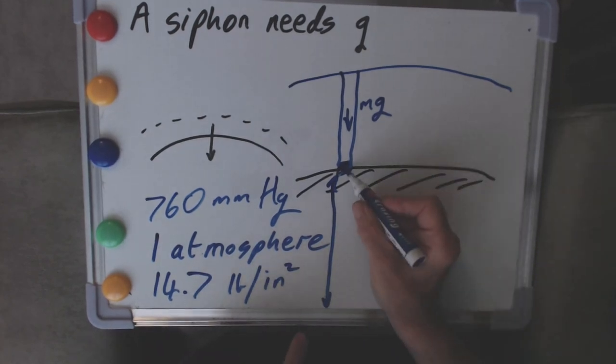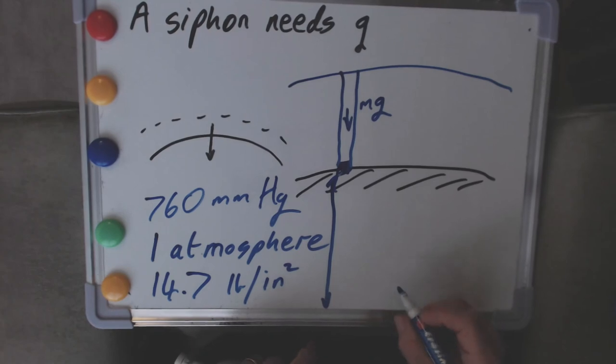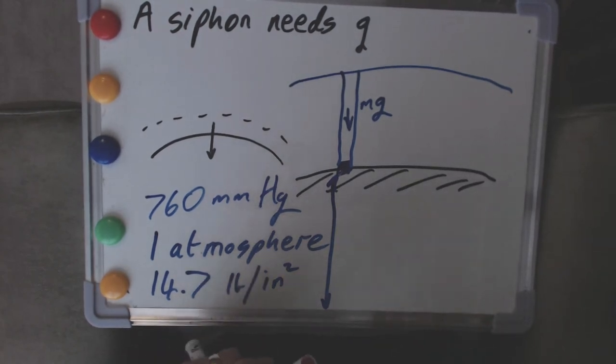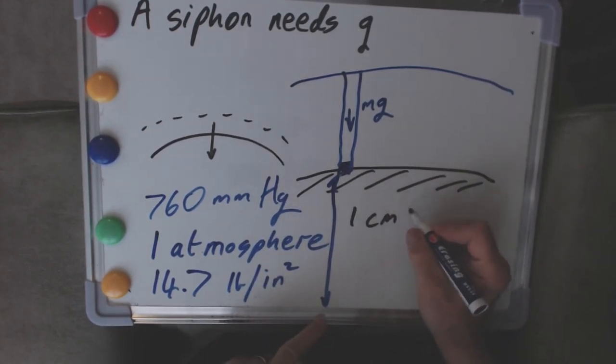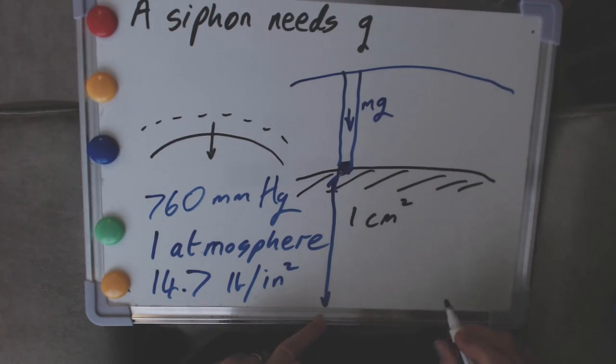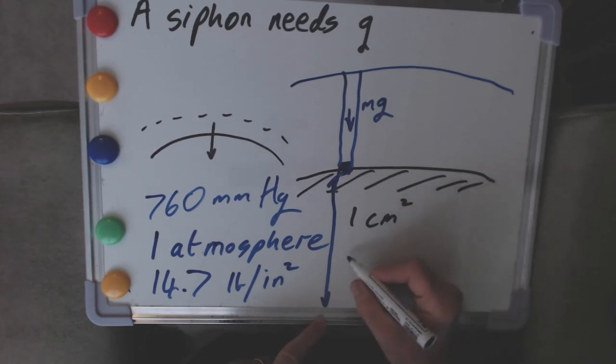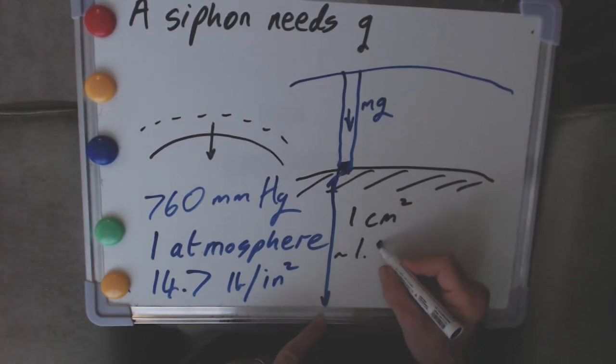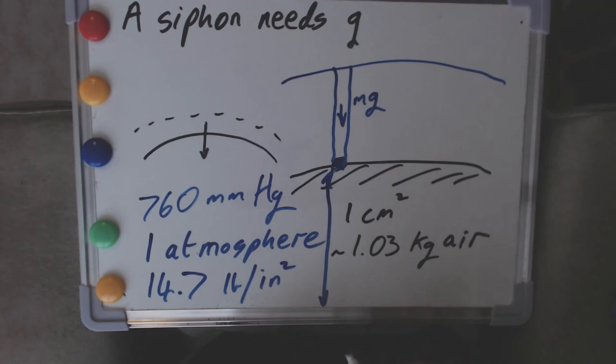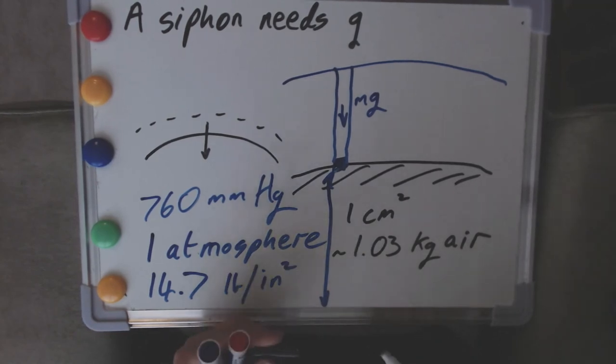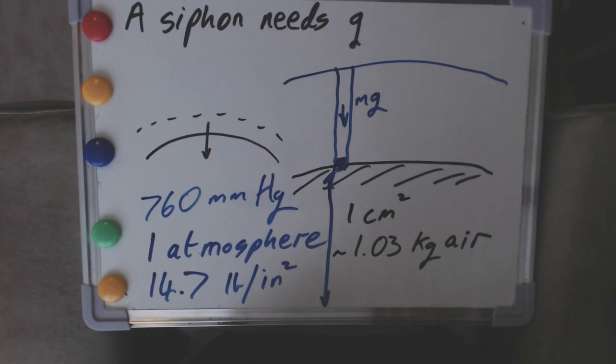So in other words, if we look at this surface down here, so let's take every square centimeter, for instance, of our heads. So one square centimeter has above it about, well it's just over, but it's about 1.03 kilograms of air. That would be the mass, and if we multiply that by g, that's actually what gives us the downward force, the weight of the air.